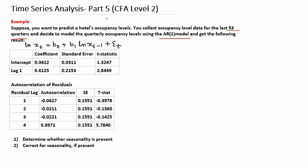The second table provides autocorrelation of residuals for 4 lags, with the value of autocorrelation, standard error, and t-statistics for each lag. The question asks you to do two things: first, determine whether seasonality is present; and second, if seasonality is present, correct for it by re-specifying the original model.